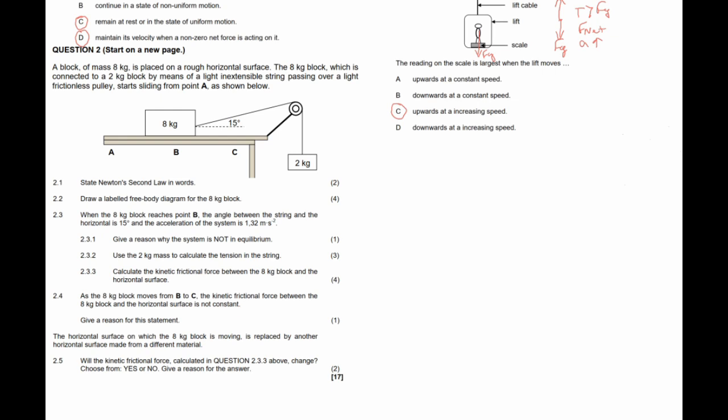Question 2 relates to mechanics: a block of mass 8 kilograms is placed on a rough horizontal surface. The 8 kilogram block is connected to a 2 kilogram block by means of a light inextensible string passing over a light frictionless pulley, and starts sliding from point A. The 2 kilogram mass is moving downward, so the positive direction has the block moving from point A through point B to point C.